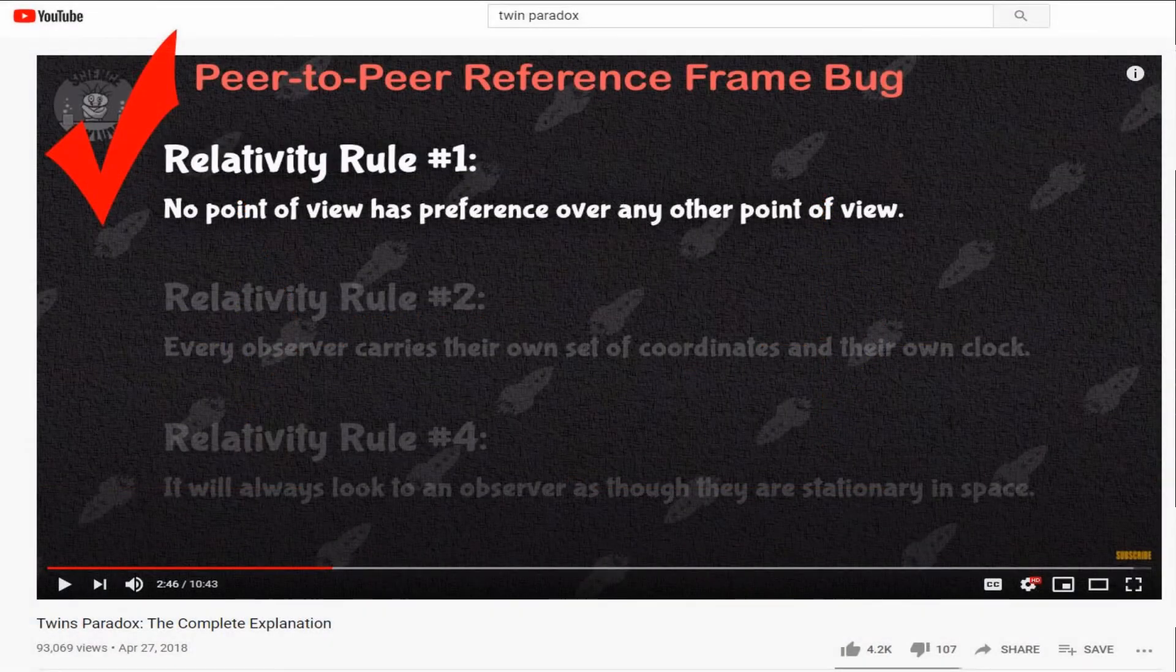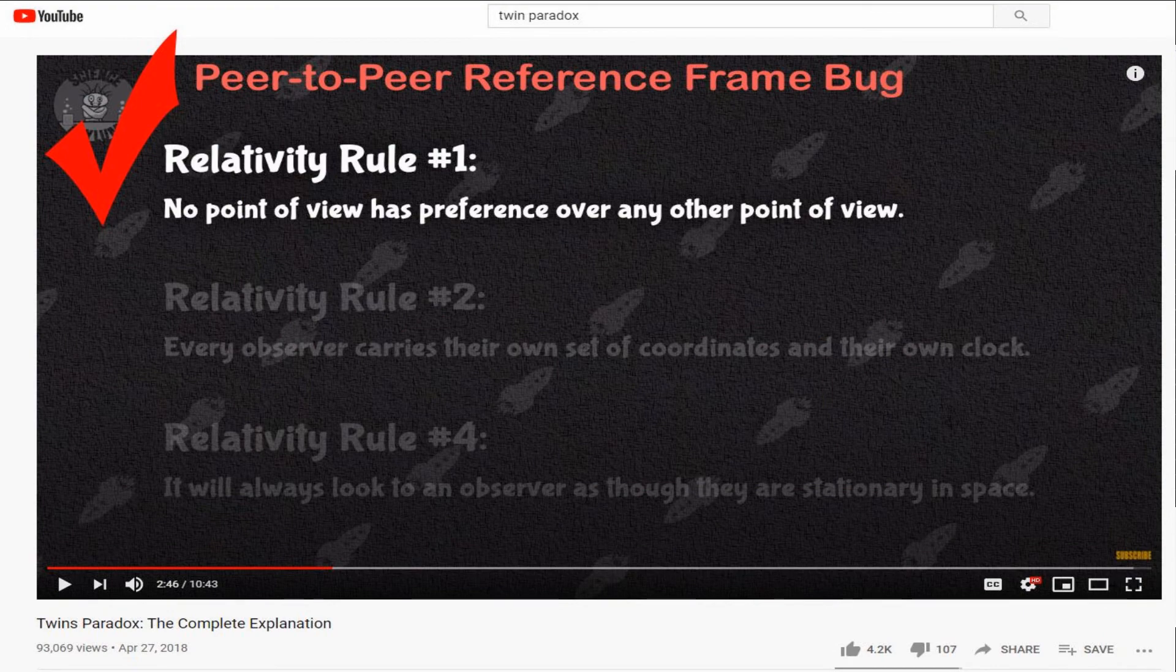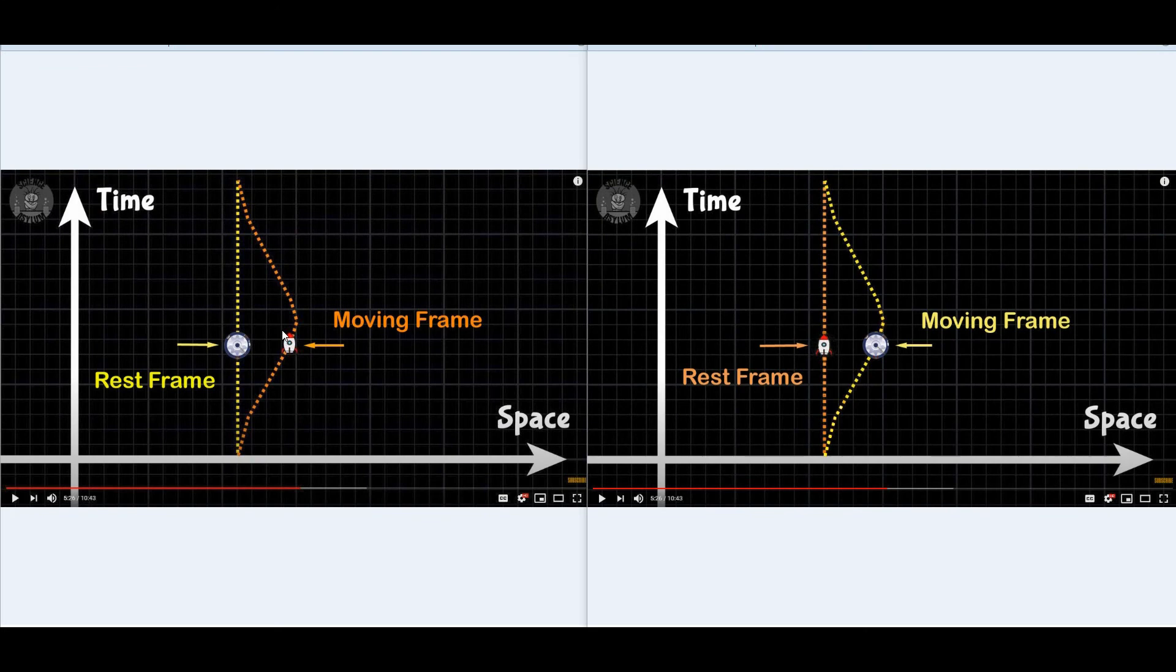When either reference frame has the ability to claim to be at rest, and then the one on the move has a slower clock, these two principles are not compatible. And this is a cause for a lot of the illogic that is in this theory.